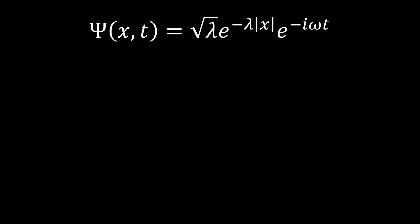From part A, we found this normalized wave function by finding this constant square root of lambda out in front. And now what we're going to do is we are going to find our expectation values of x and the expectation value of x squared.